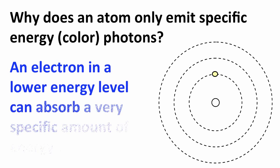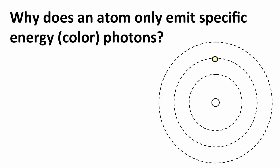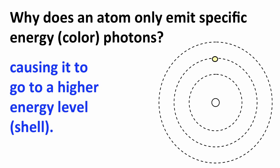Now an electron in an atom, in a lower energy level, can absorb a very specific amount of energy, and doing so, move up to a higher energy level. So the electron that was normally in the first energy level might absorb some energy and go to the second energy level, or it might absorb more energy and go to the third energy level.